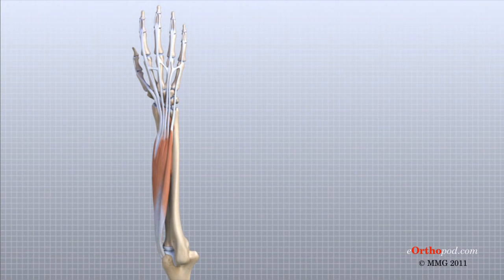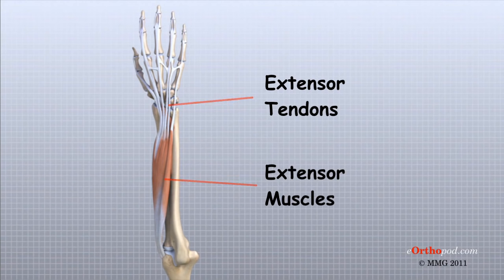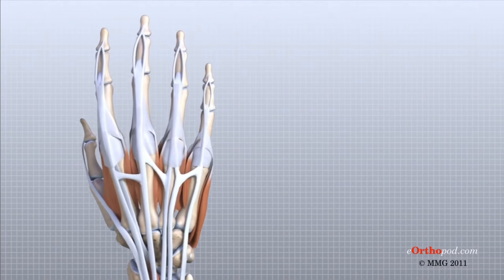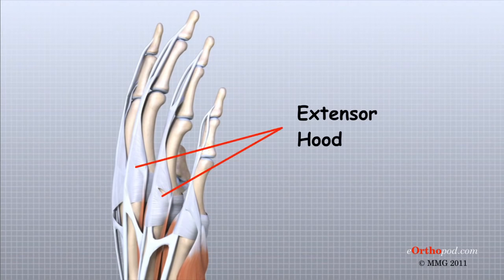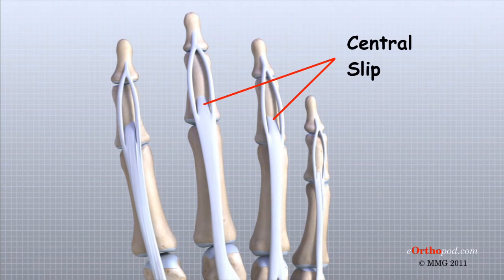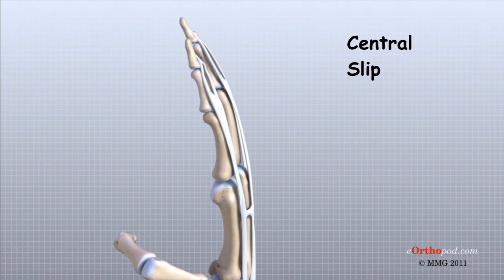The tendons that allow each finger joint to straighten are called the extensor tendons. The extensor tendons of the fingers begin as muscles that arise from the backside of the forearm bones. These muscles travel towards the hand where they eventually connect to the extensor tendons before crossing over the back of the wrist joint. As they travel into the fingers, the extensor tendons become the extensor hood. The extensor hood flattens out to cover the top of the finger and sends out branches on each side that connect to the bones in the middle and end of the finger. The place where the extensor tendon attaches to the middle phalanx is called the central slip. When the extensor muscles contract, they tug on the extensor tendon and straighten the finger. Problems occur when the central slip is damaged, as can happen with a tear.